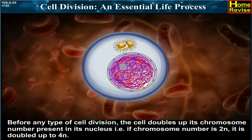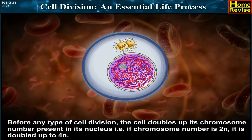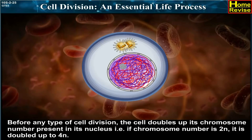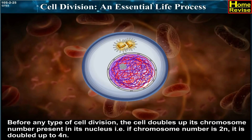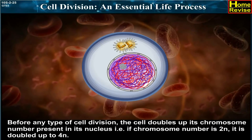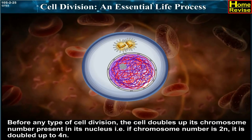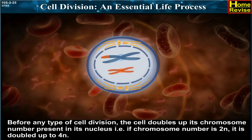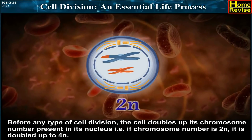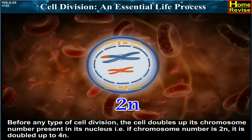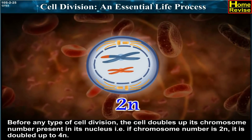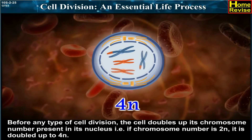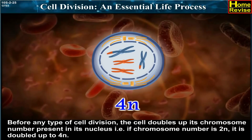Before any type of cell division, the cell doubles up its chromosome number present in its nucleus. That is, if the chromosome number is 2n, it is doubled up to 4n.